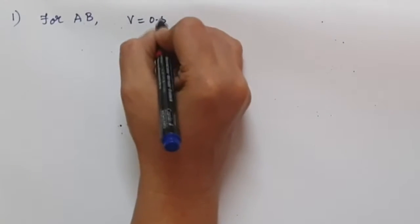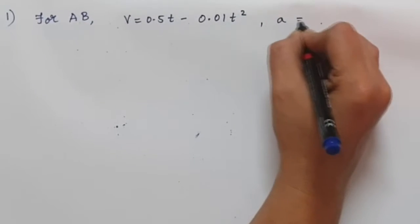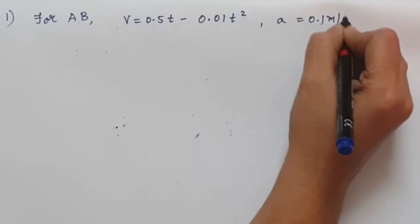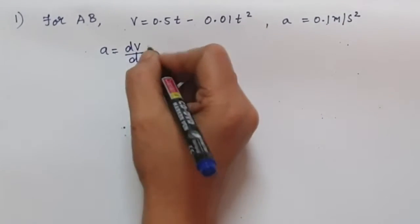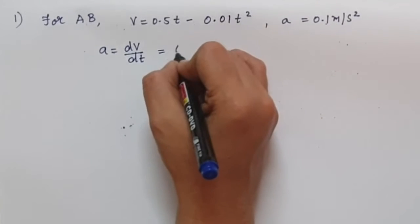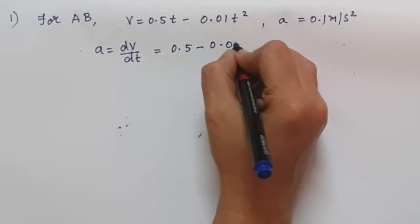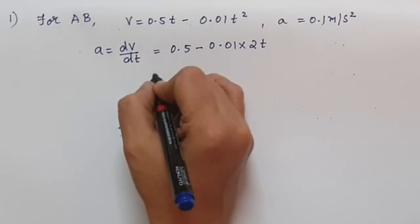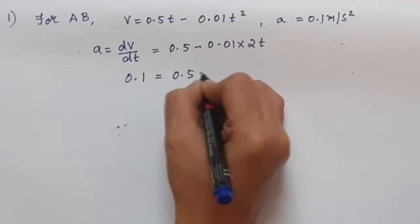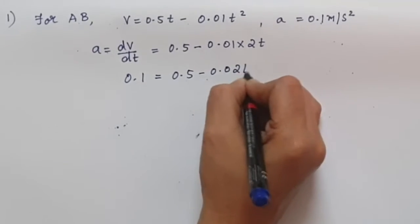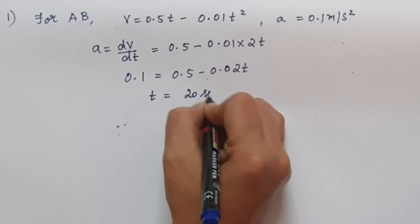For AB, V = 0.5t − 0.01t². We know acceleration a = dV/dt. Differentiating gives a = 0.5 − 0.02t. Setting this equal to 0.1 and simplifying, t = 20 seconds.